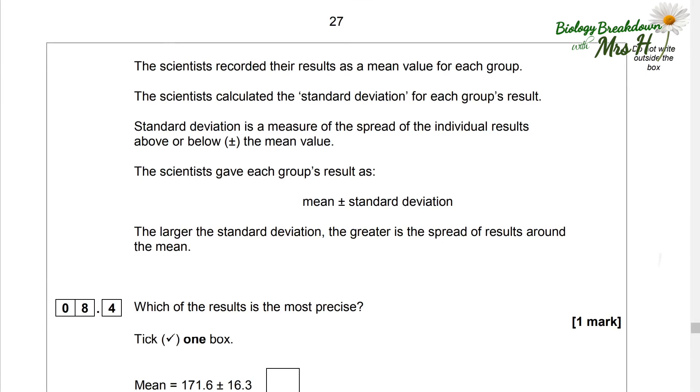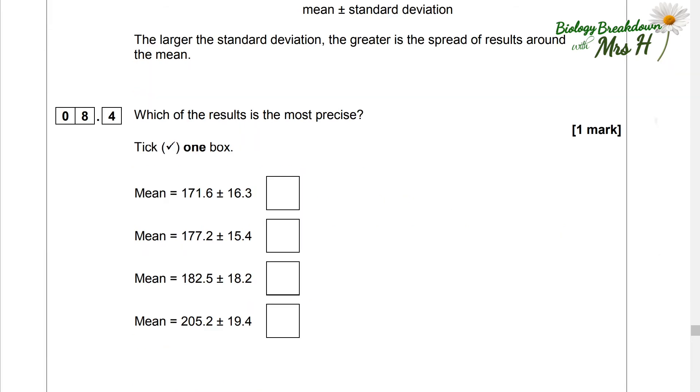The scientists recorded their results as a mean value for each group. The scientists calculated the standard deviation for each group's results. So most of us have never heard of this at GCSE. It's something we do at A-level biology. They are going to tell you what it is and they want to see if you can figure it out. Yeah, it's application. Yes, it's higher level. So let's give it a go. Standard deviation is a measure of the spread of the individual results above or below the mean value. The scientists gave each group's results as a mean plus or minus a standard deviation. The larger the standard deviation, the greater is the spread of results around the mean.